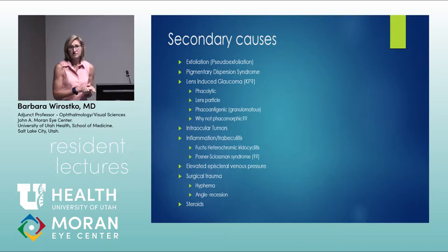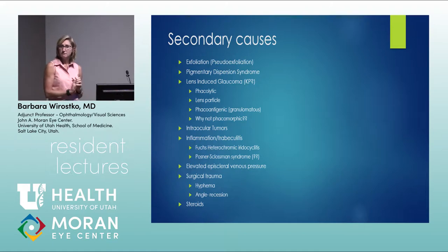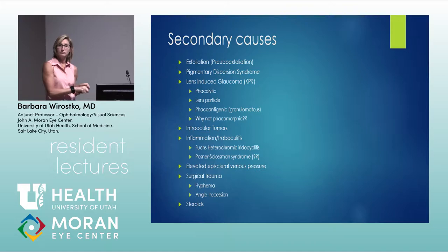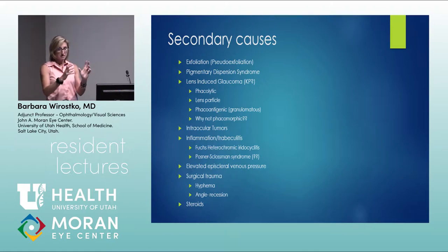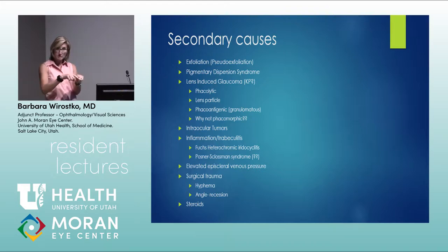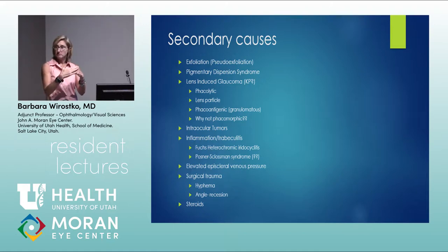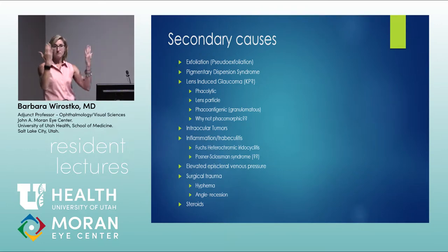Try to get pigment dispersion patients to actively disperse during the exam and check their pressure. Management depends on the IOP response: if pressure stays in the teens during dispersion, you may observe; if it spikes into the 30s, treatment is needed. A peripheral iridotomy (PI) is considered for actively dispersing patients — it relieves the pressure differential between the posterior and anterior chambers, allowing the iris to come forward and reduce zonular friction.